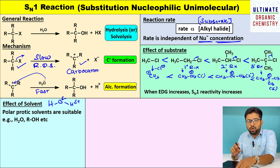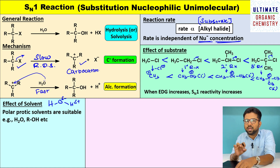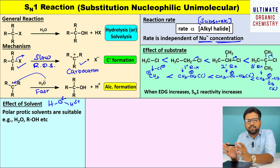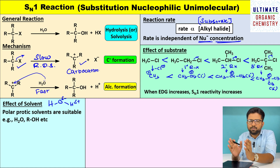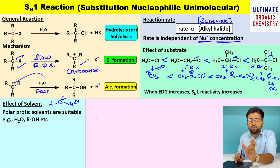What do you mean by protic? Whenever the solvent is capable of giving H plus, it is known as a protic solvent. Water gets split into H plus and OH minus and is capable of giving H plus. So that is called a protic solvent. Polar protic solvent is used in SN1 reaction.